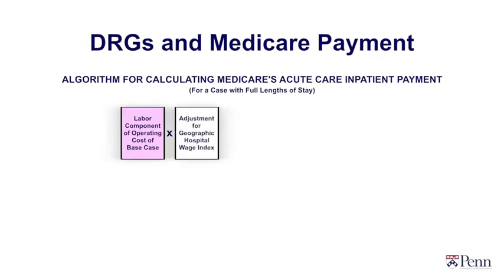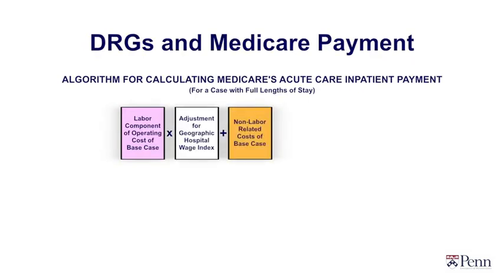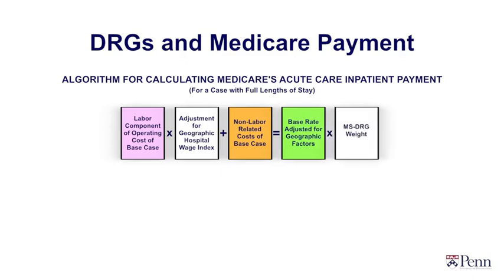How we pay hospitals is incredibly complicated. The system is called the DRG system. We take a theoretical hospital admission of a patient, and that is adjusted based upon geography — for rent, for labor costs, and other variables. That is the adjusted base rate, which is then multiplied by what's called the MS-DRG.